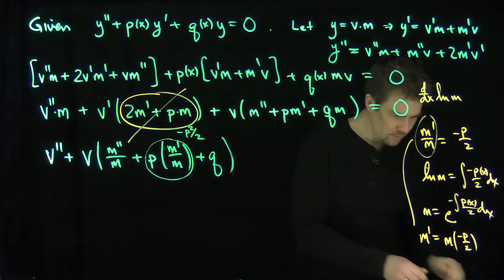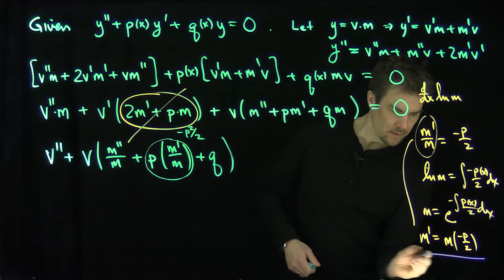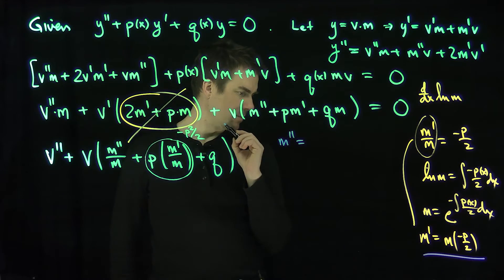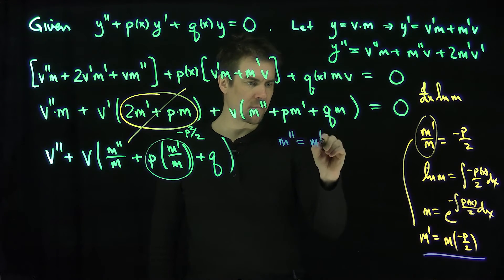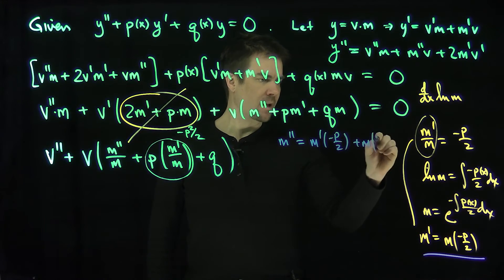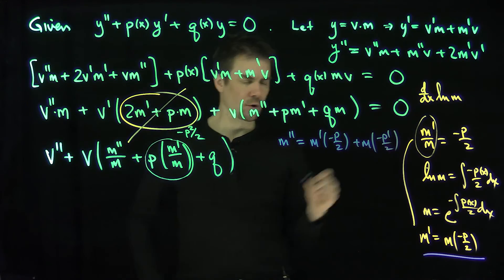Now let's look at m double prime. So if I take this equation over here, if I do m double prime, so m double prime is going to be what? m double prime is going to be m prime negative p over 2, and then plus m negative p prime over 2.